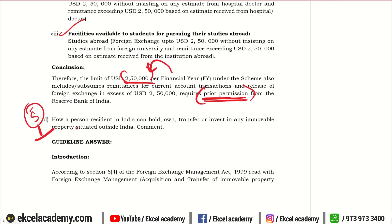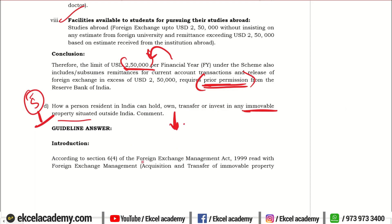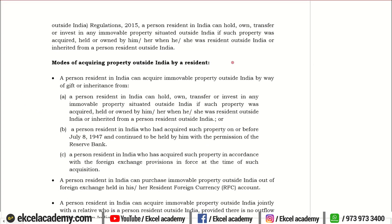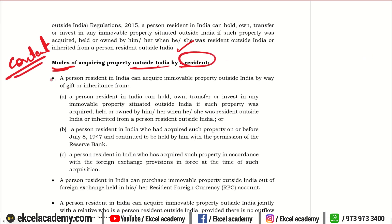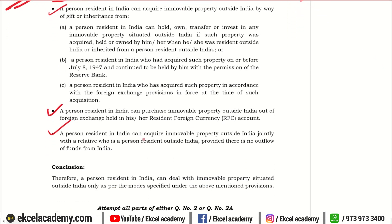Question 1d, for 5 marks: How can a person resident in India hold, own, transfer, or invest in any immovable property situated outside India — comment on this statement. We will state that it is governed under the FEMA Act 1999 under Section 6(a), give details about the enactment and a brief introduction about the statement. Then go into the main content — the modes in which a resident in India can actually invest in property situated outside India. Write the modes of acquiring the property as laid down under the FEMA Act, and conclude that a person resident in India can deal with immovable property but it should always be as per the provisions laid down under the FEMA Act.